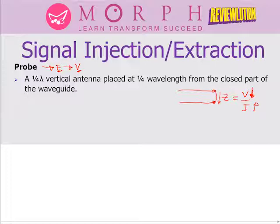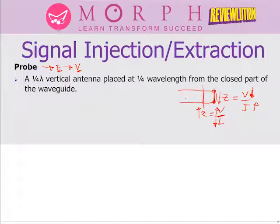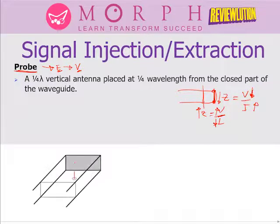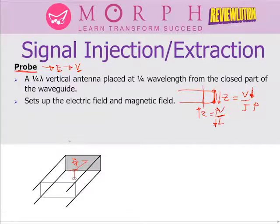We need to place the probe where there is maximum electric field or voltage. We know that at every quarter-wavelength from termination, there is an impedance inversion — maximum impedance means maximum voltage and minimum current. So at one-quarter wavelength from the shorted part of the waveguide, the voltage is strong and current is weak, meaning strong electric field and weak magnetic field. This sets up the electric field. Once the electric field is established, the magnetic field builds alongside it, creating an electromagnetic field inside the waveguide.